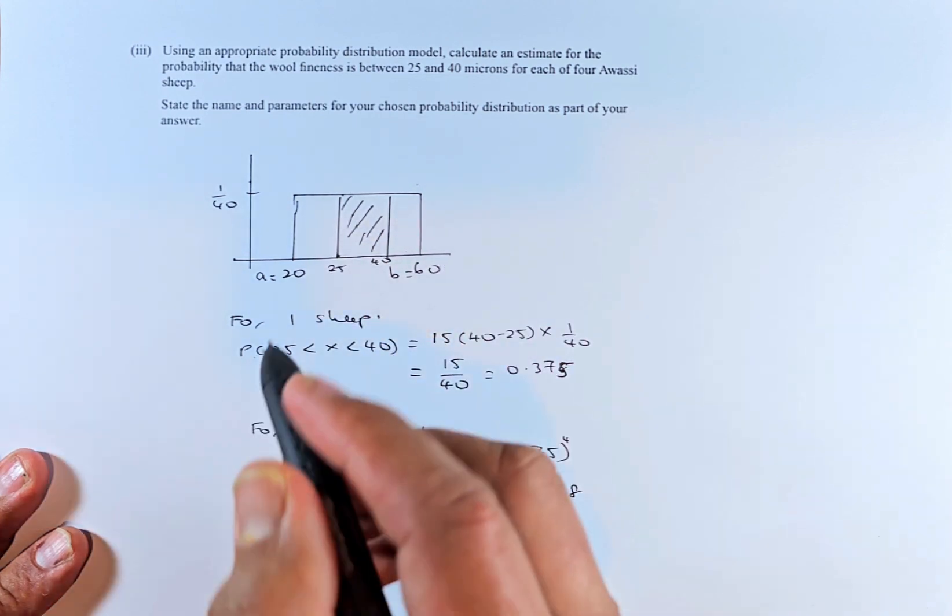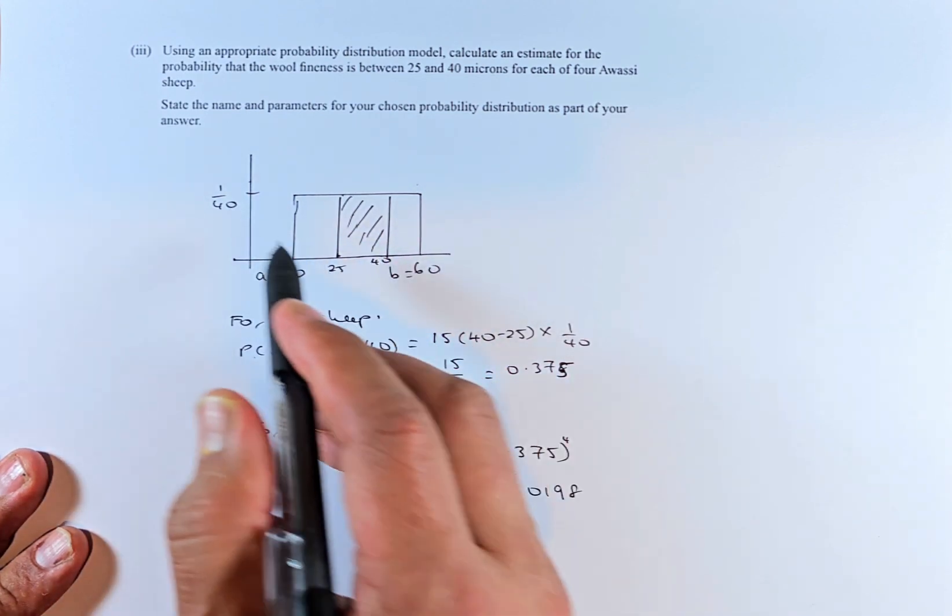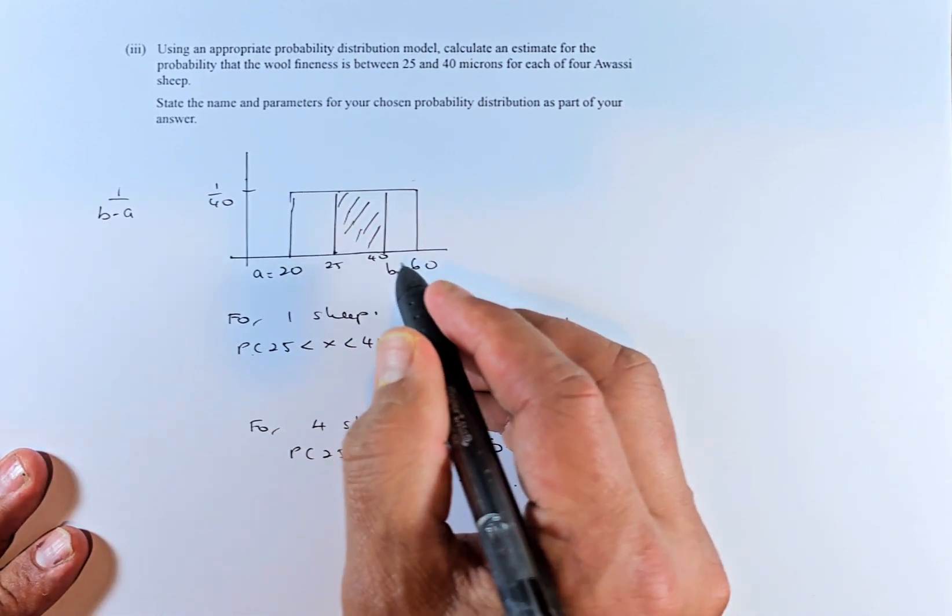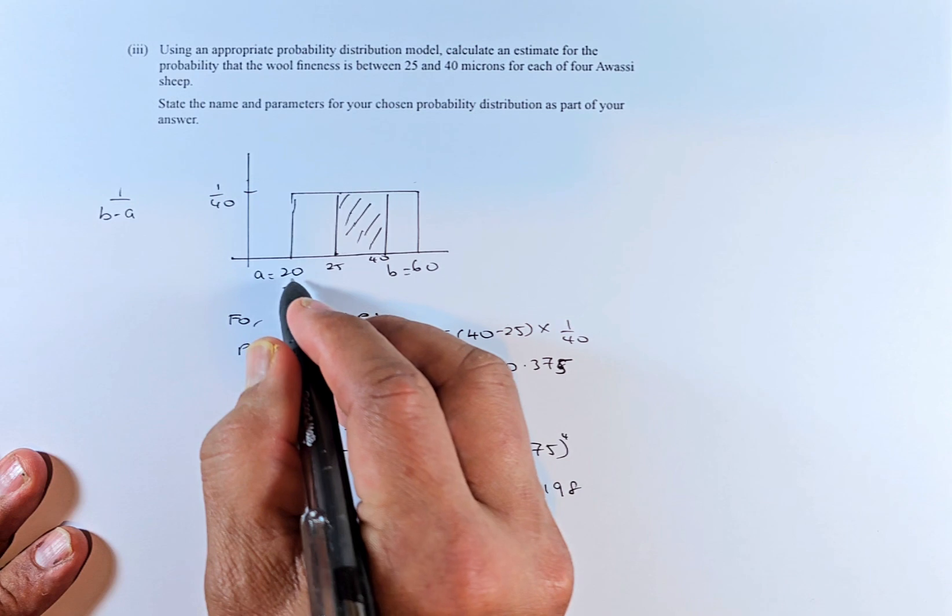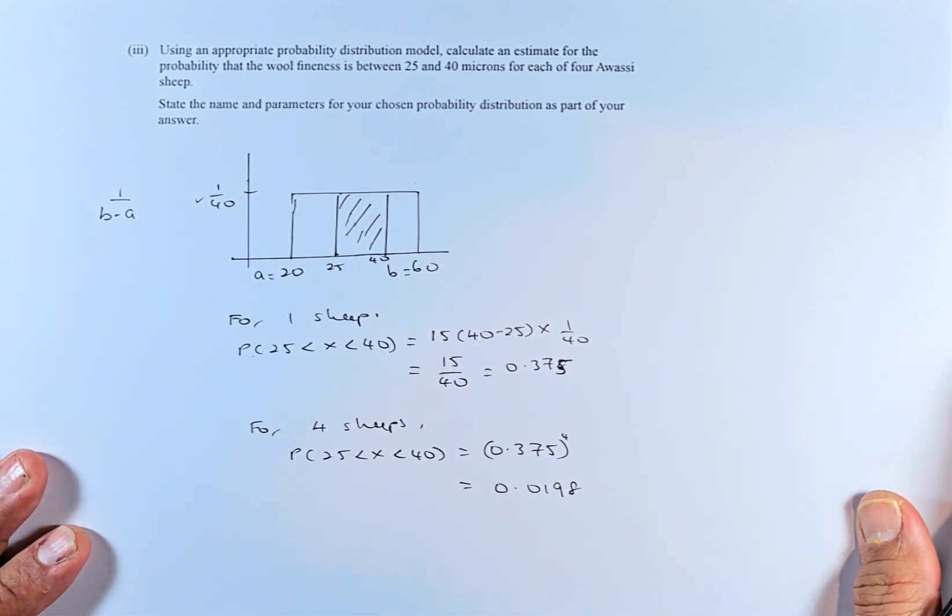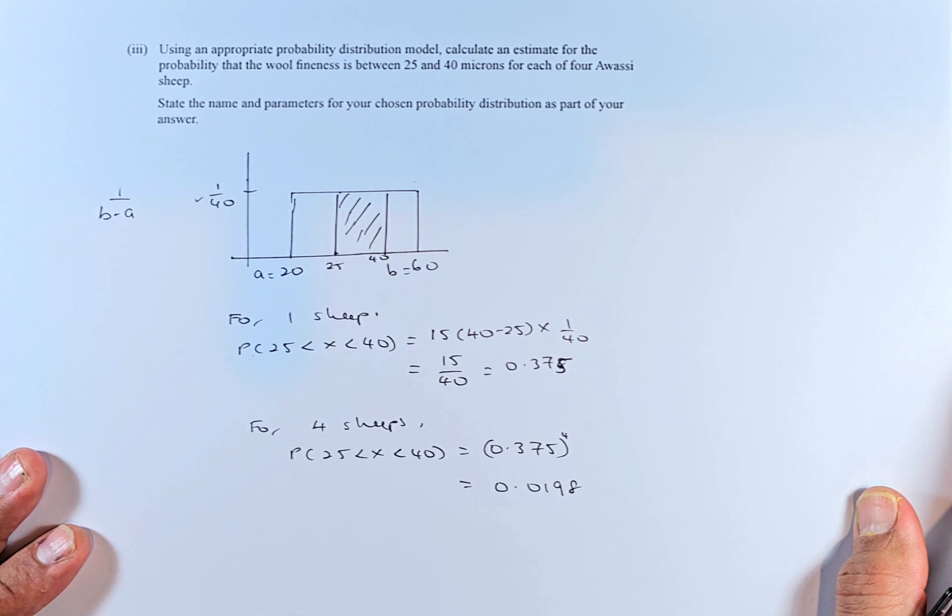Now again from part 1, the height is going to be 1 over B minus A. B is 60, A is 20. So 60 minus 20 is 40. That is why the height of the distribution is 1 over 40. So now for 1 ship...